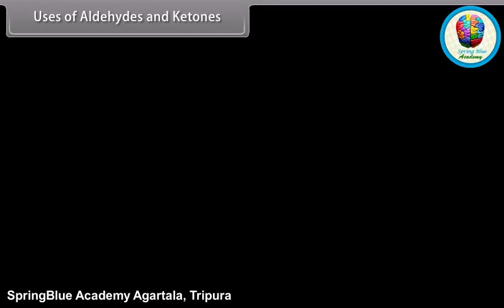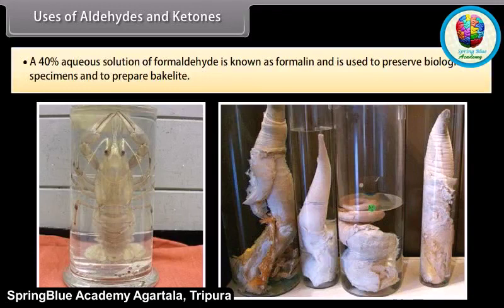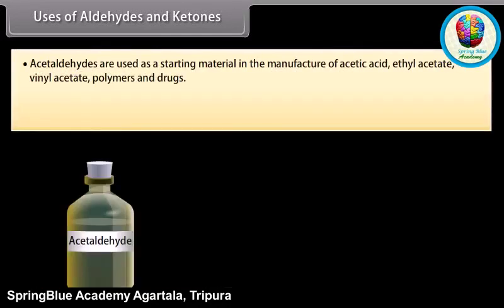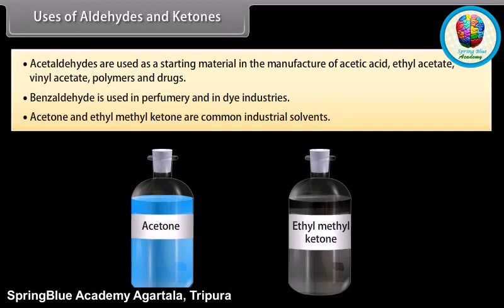Uses of aldehydes and ketones: a 40% aqueous solution of formaldehyde is known as formalin and is used to preserve biological specimens and to prepare bakelite. Acetaldehyde is used as a starting material in the manufacture of acetic acid, ethyl acetate, vinyl acetate, polymers, and drugs. Benzaldehyde is used in perfumery and in dye industries. Acetone and ethyl methyl ketone are common industrial solvents.